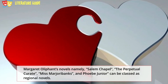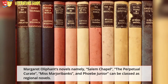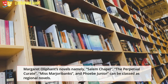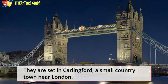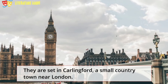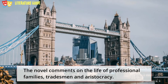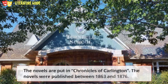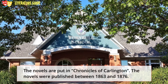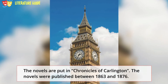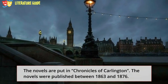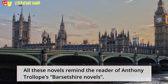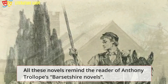Margaret Oliphant's novels — Salem Chapel, The Perpetual Curate, Miss Marjoribanks, and Phoebe Jr. — can be classed as regional novels. They are set in Carlingford, a small country town near London, and comment on the life of professional families, tradesmen, and aristocracy. The novels are collected in the Chronicles of Carlingford and were published between 1863 and 1876. All these novels remind the reader of Anthony Trollope's Barsetshire novels.